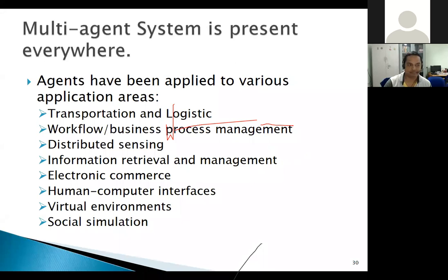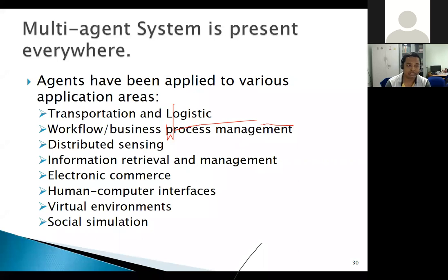Multi-agent systems are present everywhere. Agents have been applied to various application areas starting from transportation, logistics, workflow, and business process management. In distributed sensor networks, the challenge is how to coordinate sensors to get maximum output — covering maximum target regions with minimum sensor involvement. Applications also include information retrieval and management, and electronic commerce. Many of you are familiar with e-auctions like eBay — those are applications of multi-agent systems.